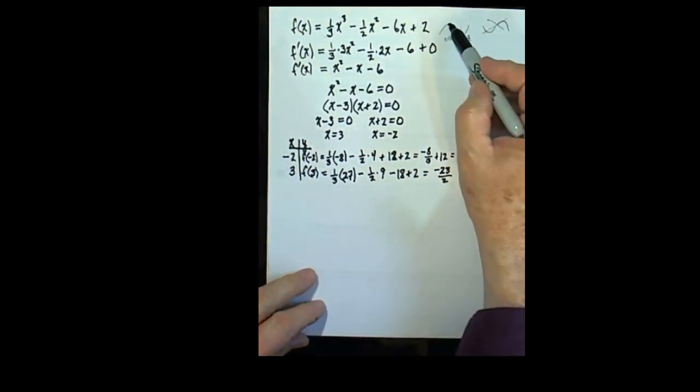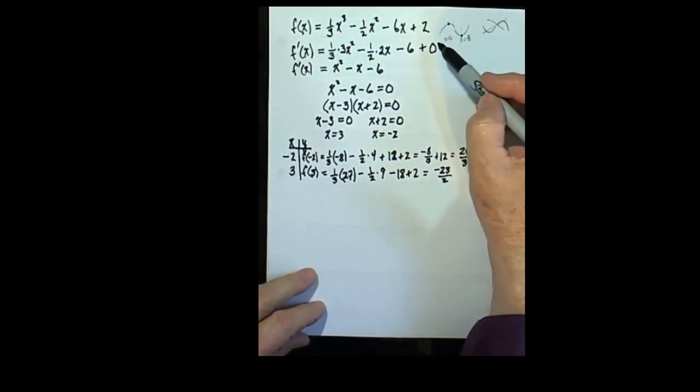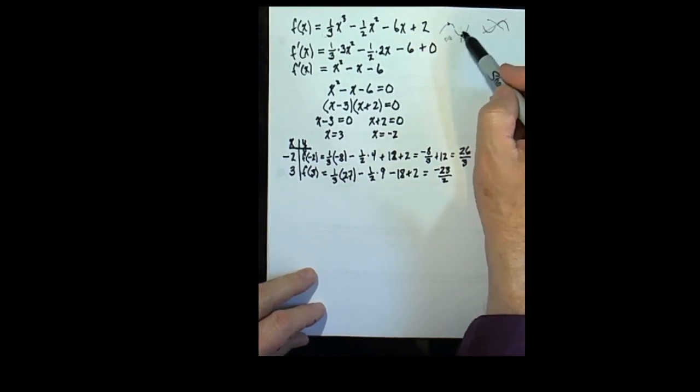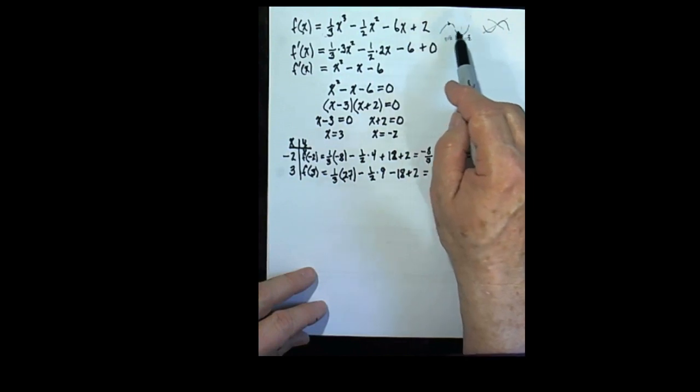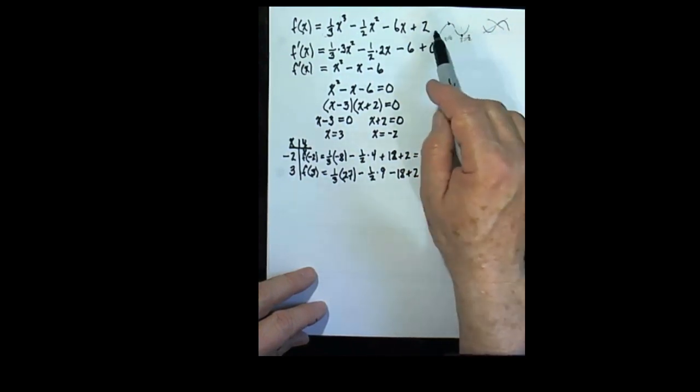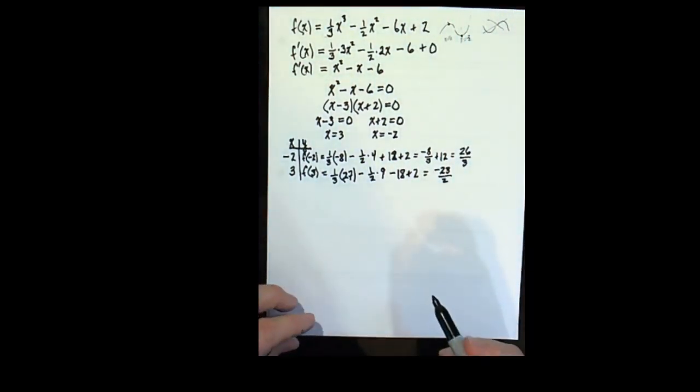So by plotting those two points that we now know, and we knew the shape of this curve, it would be going like that. Now, the interesting thing is that the derivative can also help us know that shape or corroborate the knowledge that we already had from a previous course.